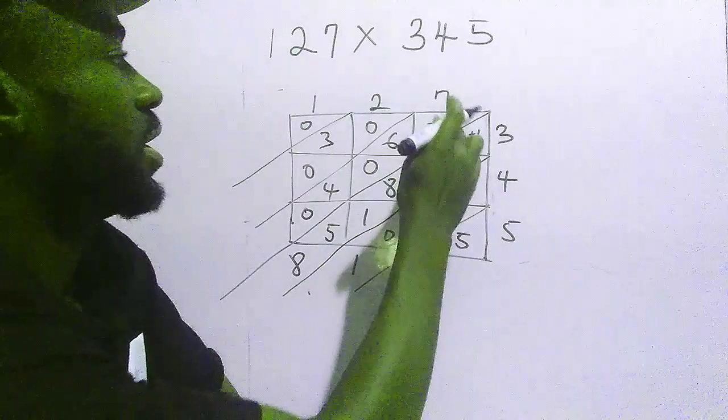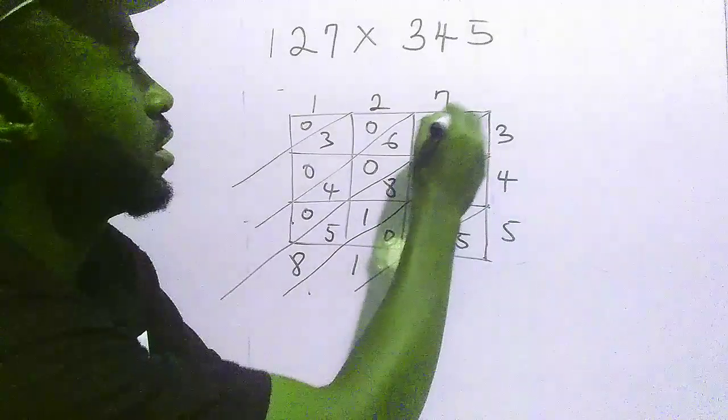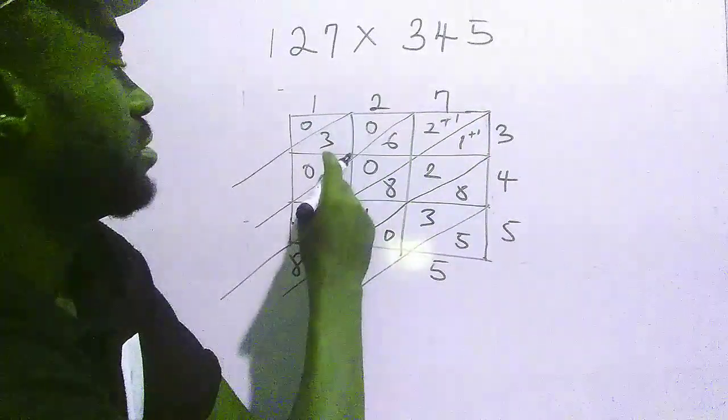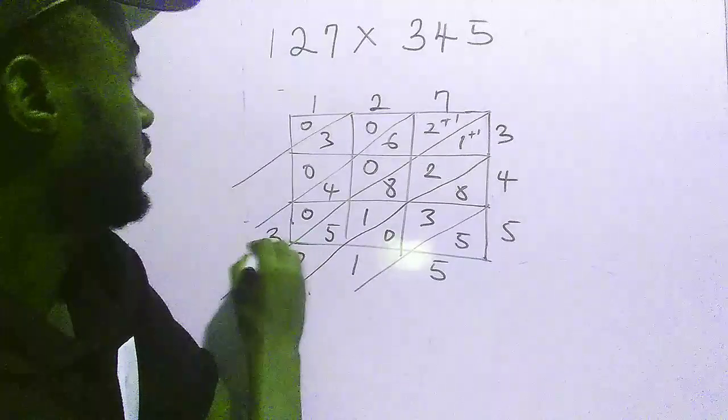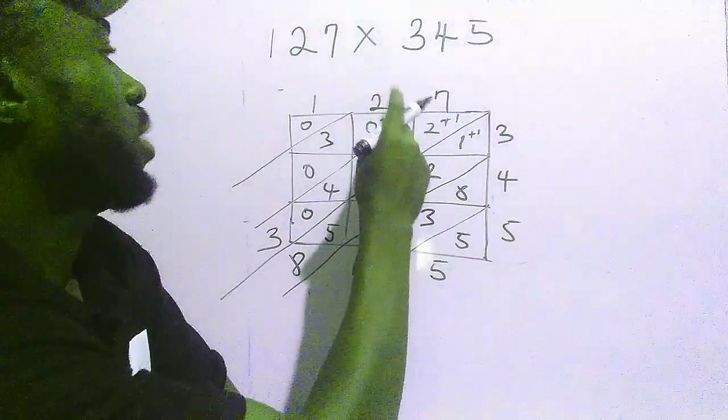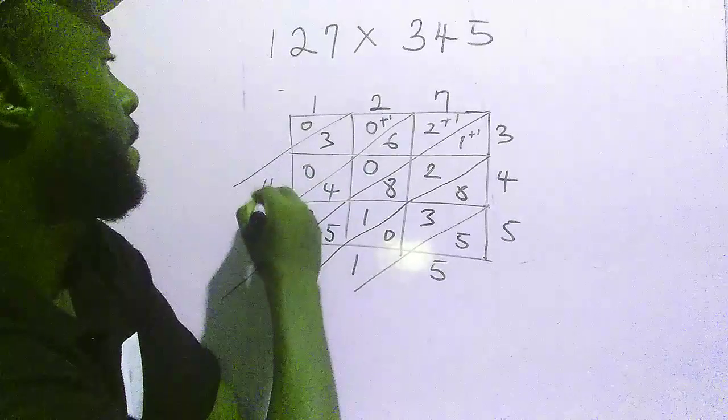Write 8 and carry 1. Add it here to get 3. Three plus six is 9, plus four is 13. Carry 1. One plus three is 4. Then 0.